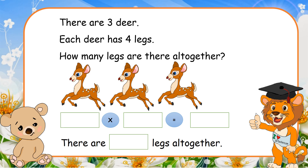There are three deer. Each deer has four legs. How many legs are there all together? Three times four equal twelve. There are twelve legs all together.